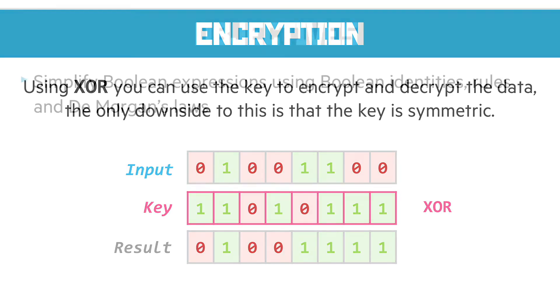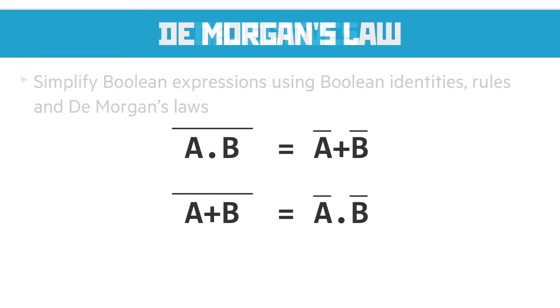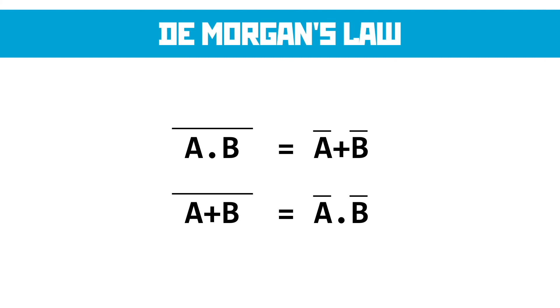Our final objective is to simplify Boolean expressions using Boolean identities, rules, and De Morgan's law. Now De Morgan's law is very straightforward. It's that not A and B is the same as not A or not B. And then likewise, not A or B is the same as not A and not B.